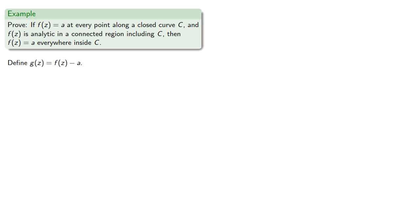g of z is f of z minus a, then g of z is 0 everywhere along our curve. And by the previous result, everywhere inside C, we have g of z equal to 0. And so, f of z is equal to a.